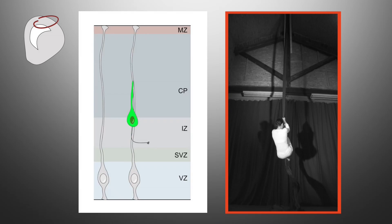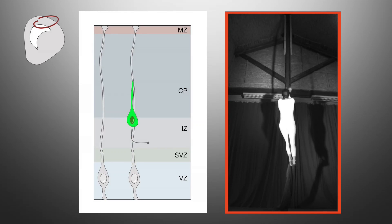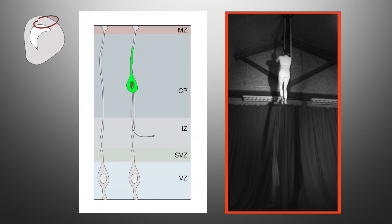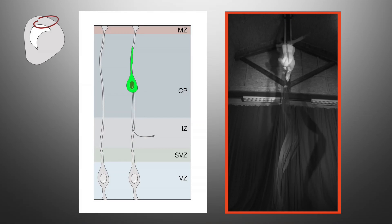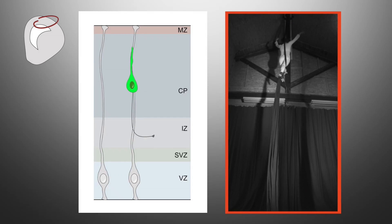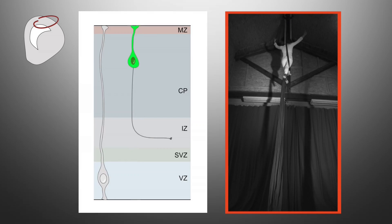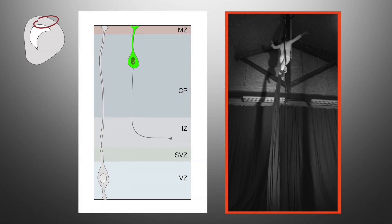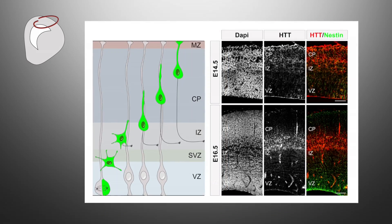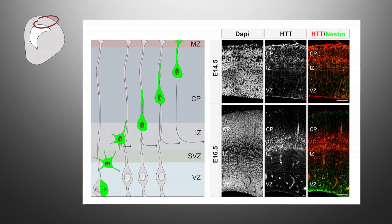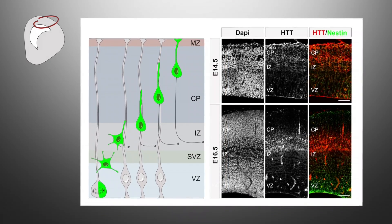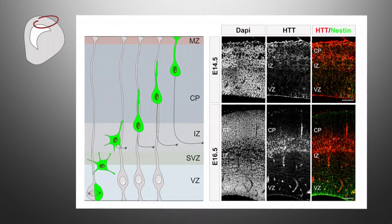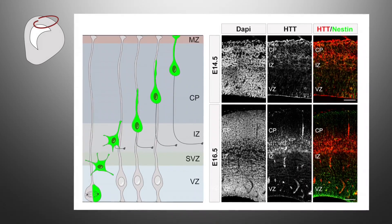We observed Huntington enriched in the region where cells polarize and start their migration.